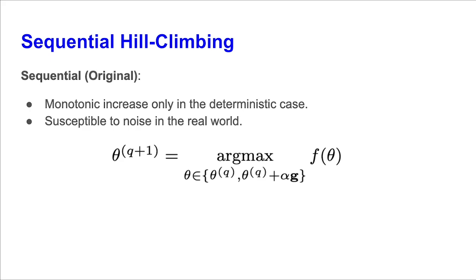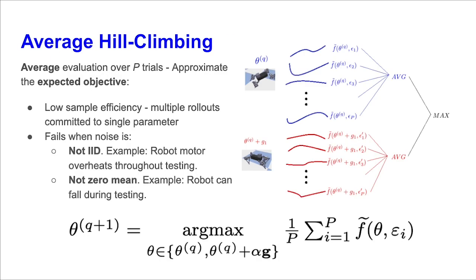Sequential hill-climbing is the original hill-climbing algorithm proposed only for deterministic environments. While it leads to monotonic increase when there is no noise, its search direction becomes inaccurate when noise exists. Instead, we need to modify this method. One such way is to repeatedly use the same input p times and average the trials, as shown in the figure with the same colors, in order to get an approximation on the expected objective. Unfortunately, this possesses numerous drawbacks. One of these drawbacks is its low sample efficiency. Instead of using these trials to explore the parameter space, they are being used repeatedly on the same parameter. Furthermore, this method is inaccurate because the noise is not an IID random variable. For example, the robot motor overheats throughout testing, causing correlations between different runs. In addition, the noise is not zero mean. For example, the robot can accidentally fall down during testing, producing a very large negative reward.